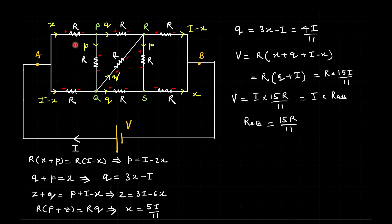Applying KVL, voltage from one node to another must be equal along both paths. With all resistances equal to R, voltage from one side is R·(x + p) and from the other is R·(I − x), giving p = I − 2x. Using KCL, x = q + p, so q = 3x − I. Applying KCL at the middle junction — incoming current I − x and p equals outgoing z + q — gives z = 3I − 6x.